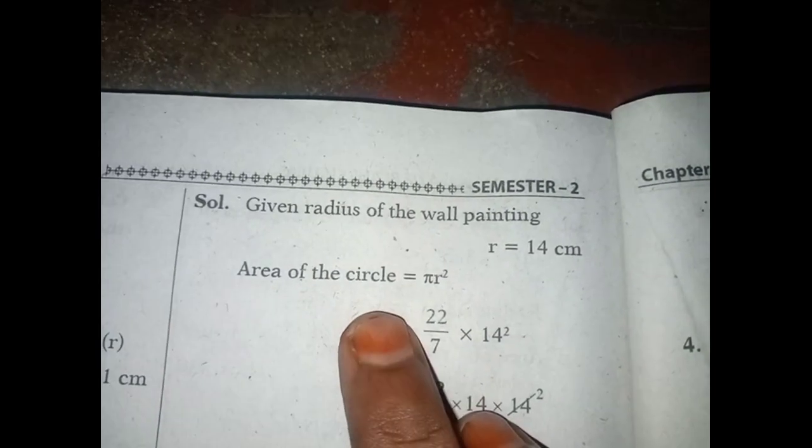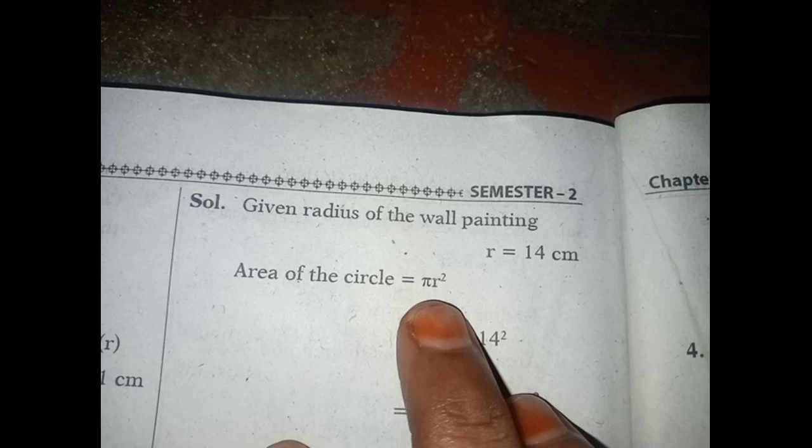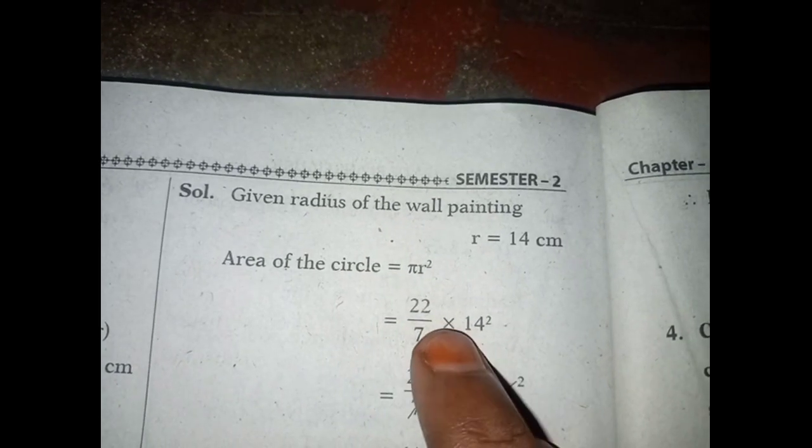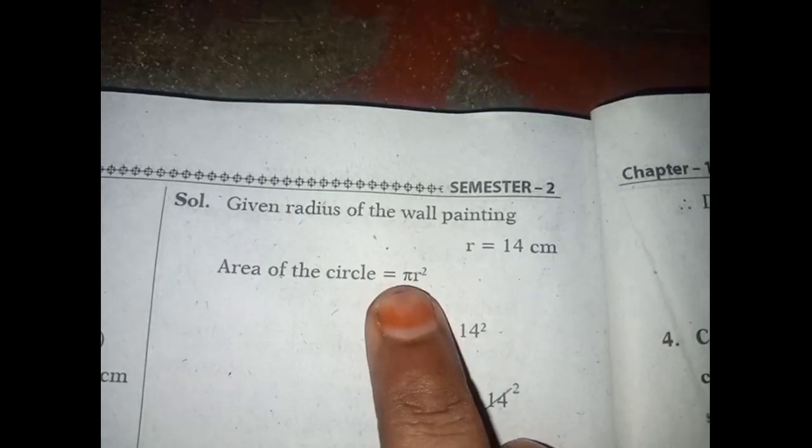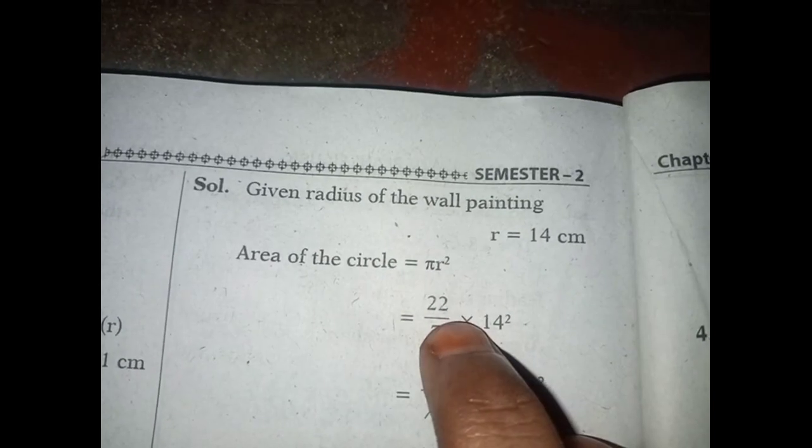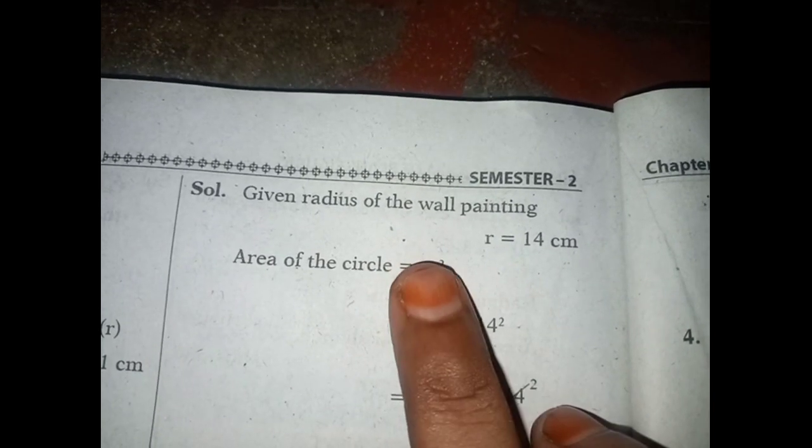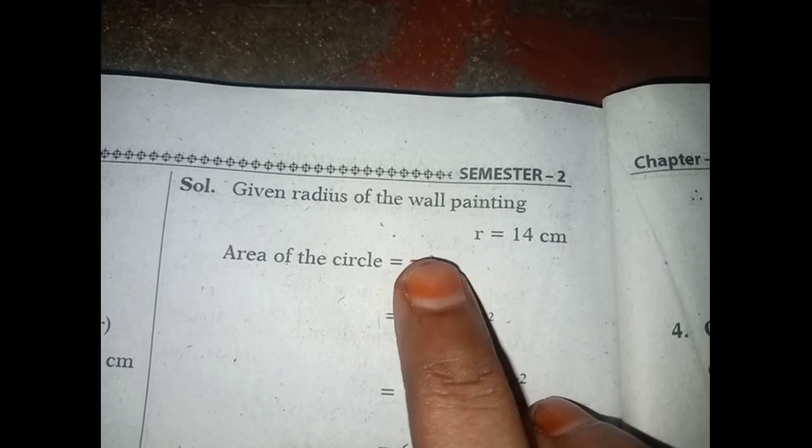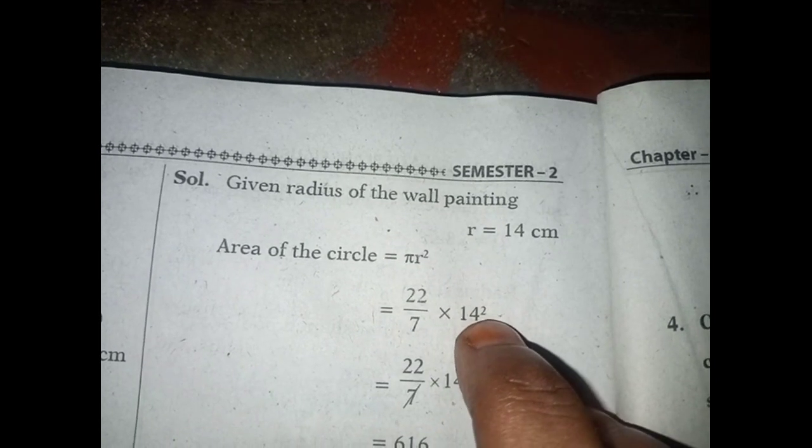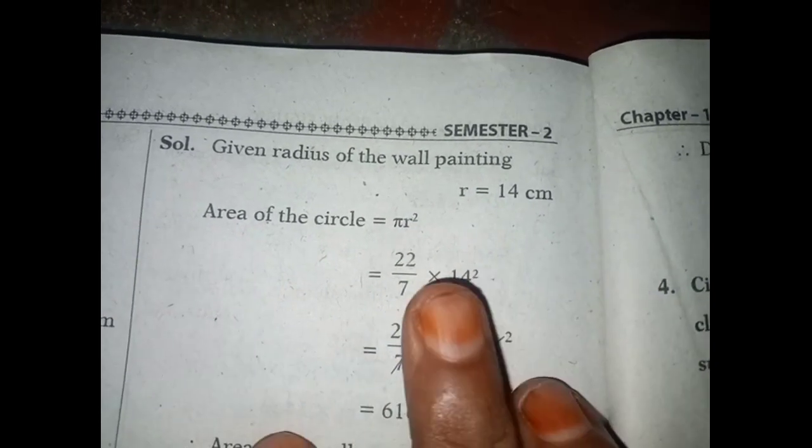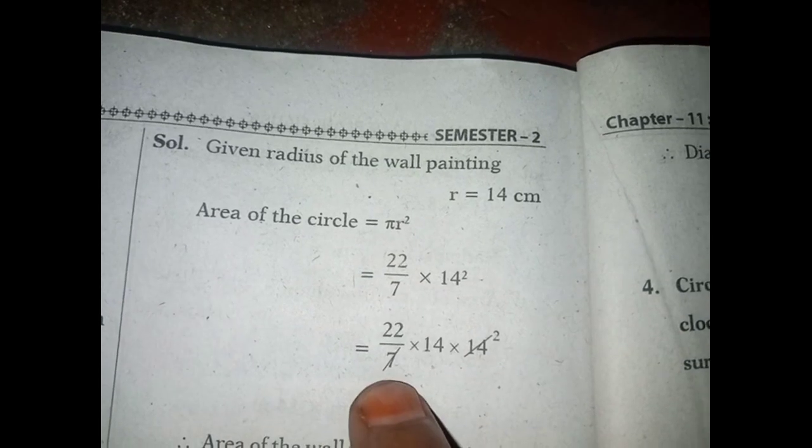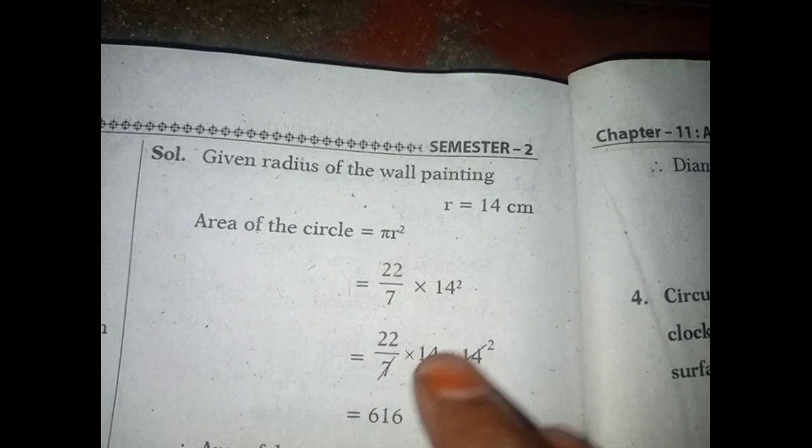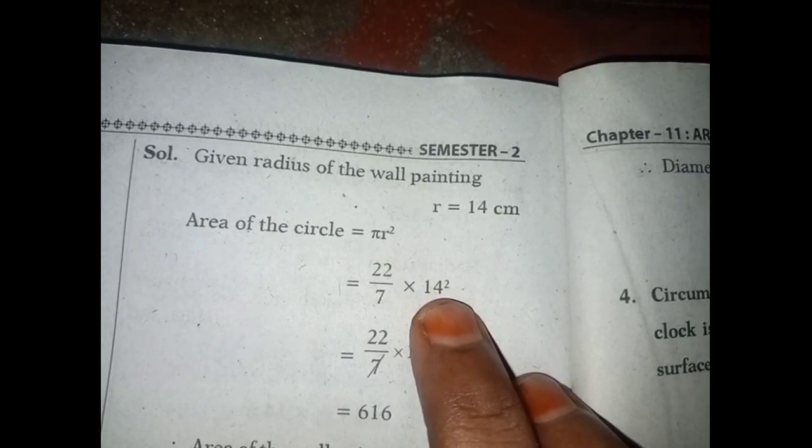Area of the circle equals πr squared equals 22 by 7. Pi equals 22 by 7 into r, 14 squared, equals 22 by 7 into 14 into 14.